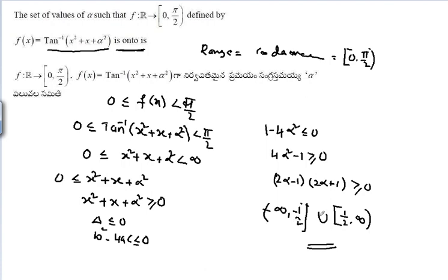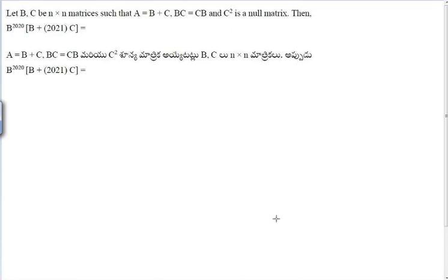Next problem: Let B and C be n×n matrices such that A = B + C, BC = CB, and C² is the null matrix. Find the value of A^2020 · (B + 2020·C) — that is, find B^(2020) times (B + 2021C).